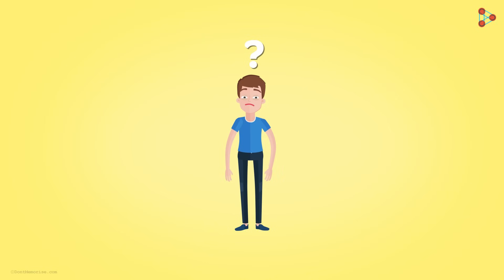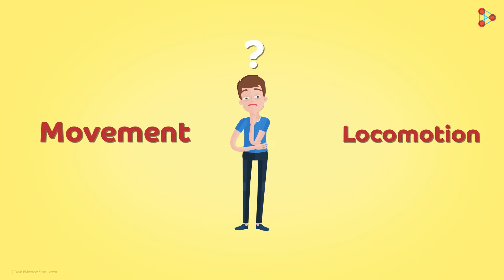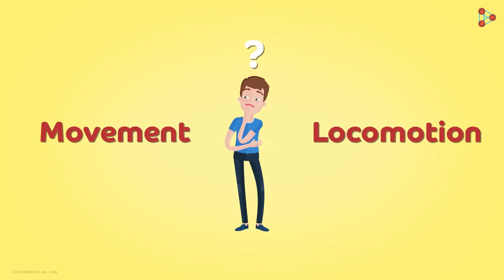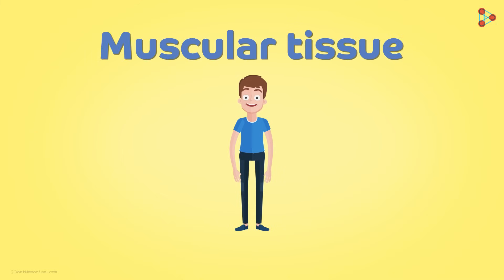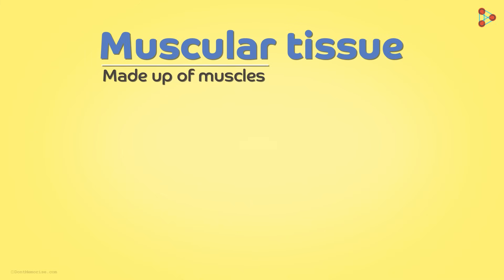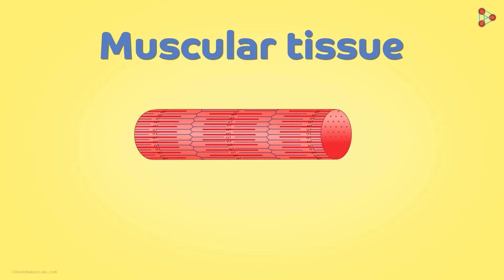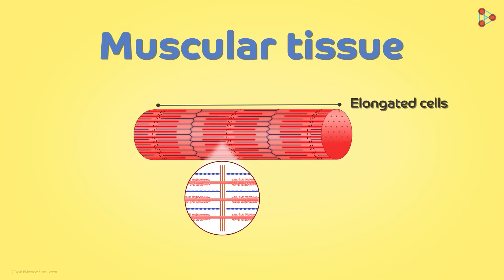So then, who helps us with these important processes of movement and locomotion? Yes, it's the muscular tissue. As the name says, muscular means made up of muscles.